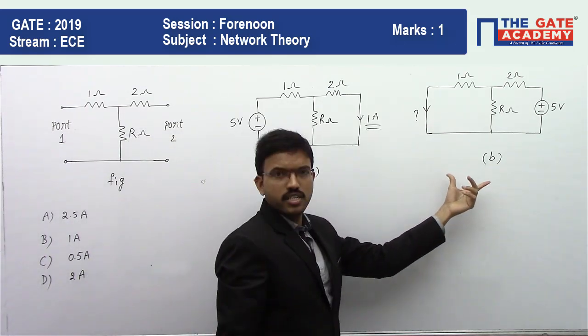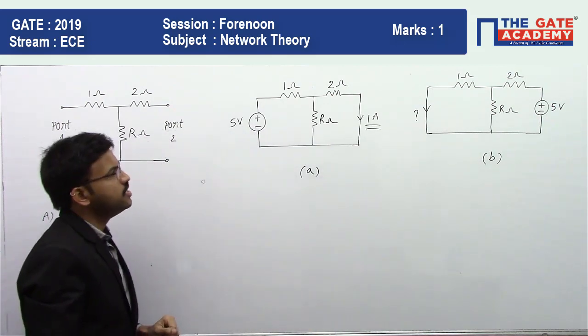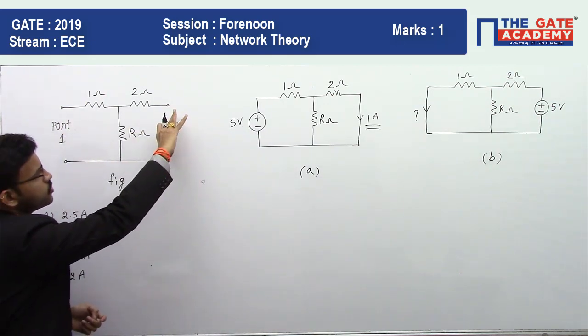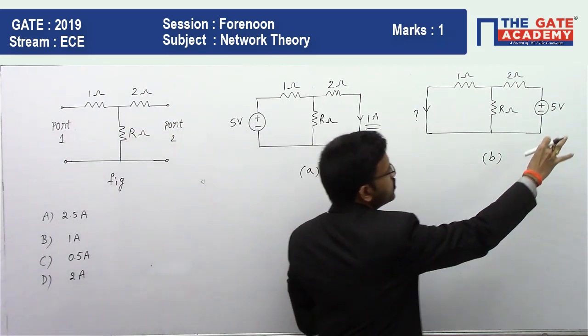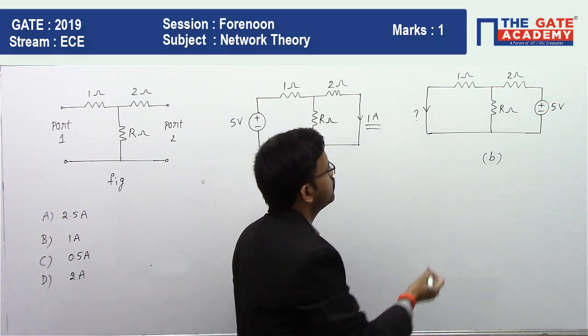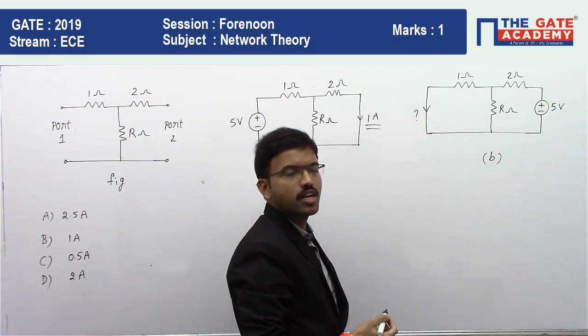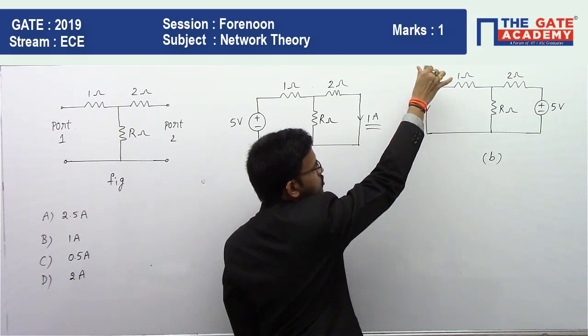Now in this particular case, what he has done is he has applied a 5 volt source at port 2 and port 1 is shorted. Now he is asking for the current flowing through the short circuit as shown.